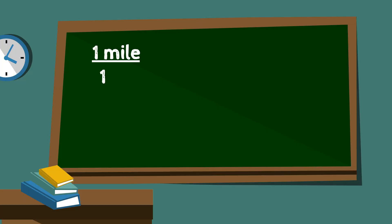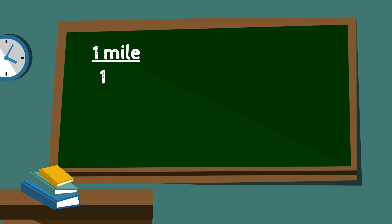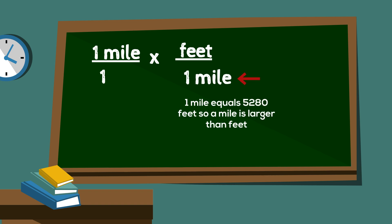Let's solve this problem. I will start at 1 mile because the question asks how many football fields are in 1 mile. I will write 1 mile over 1. I will set up a second fraction with miles as the denominator, since that's my starting unit, and feet as the numerator because I want to convert to feet first, then yards. I place a 1 by the larger unit — 1 mile equals 5,280 feet.